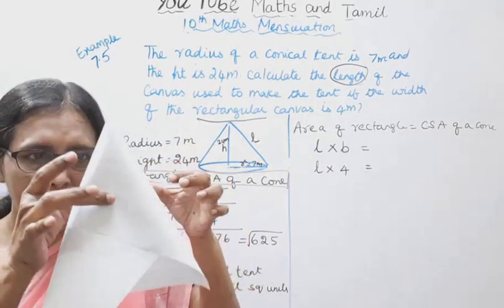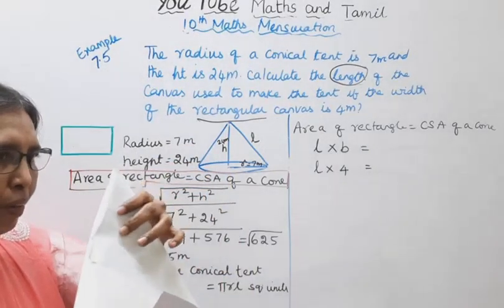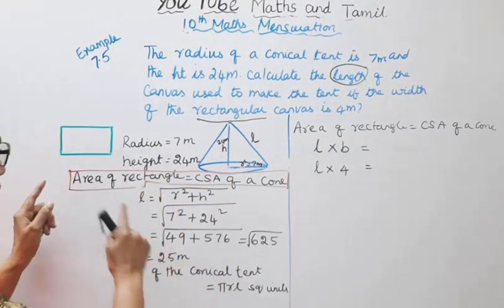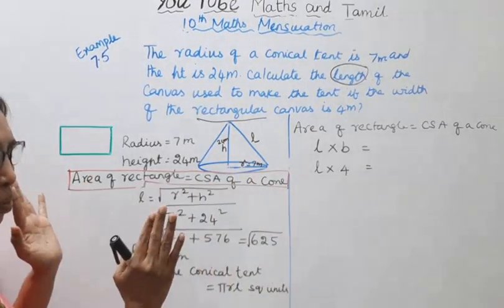Area of rectangle equals CSA of the cone. Area of rectangle = CSA of cone. Correct?